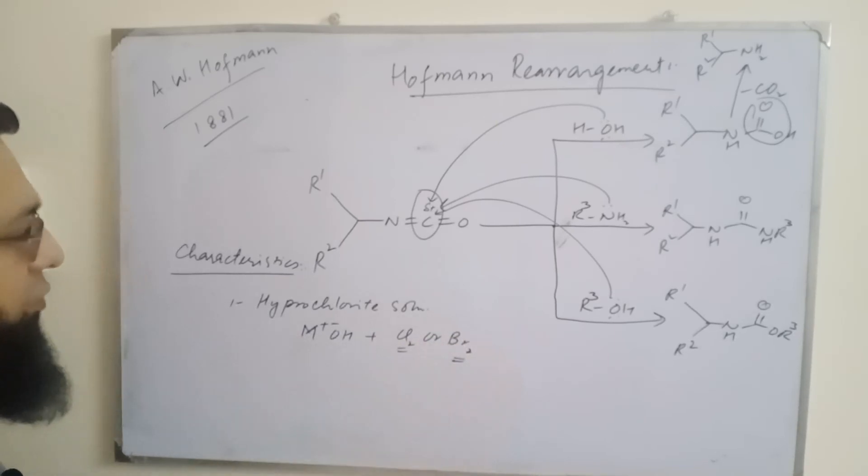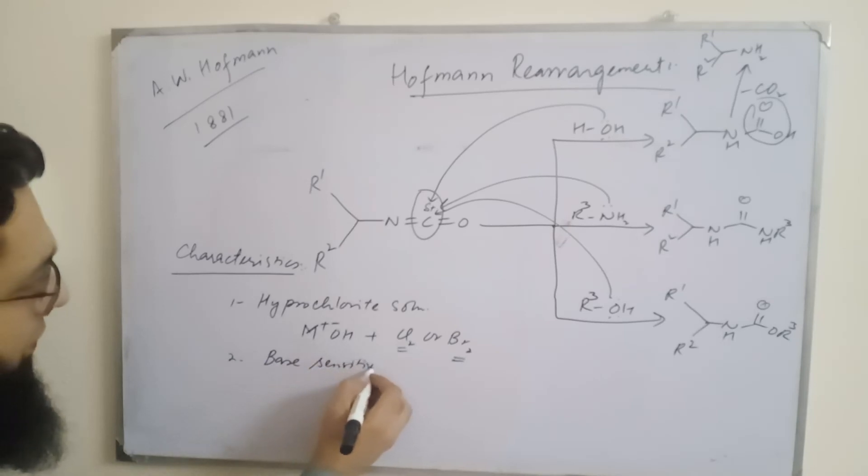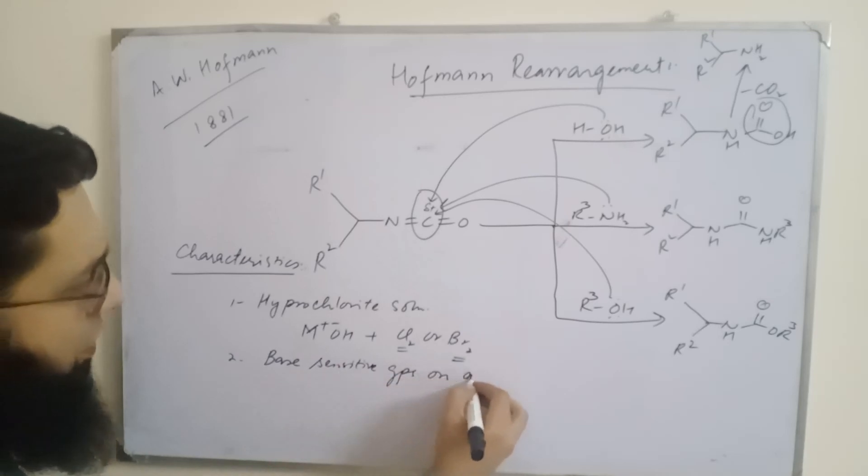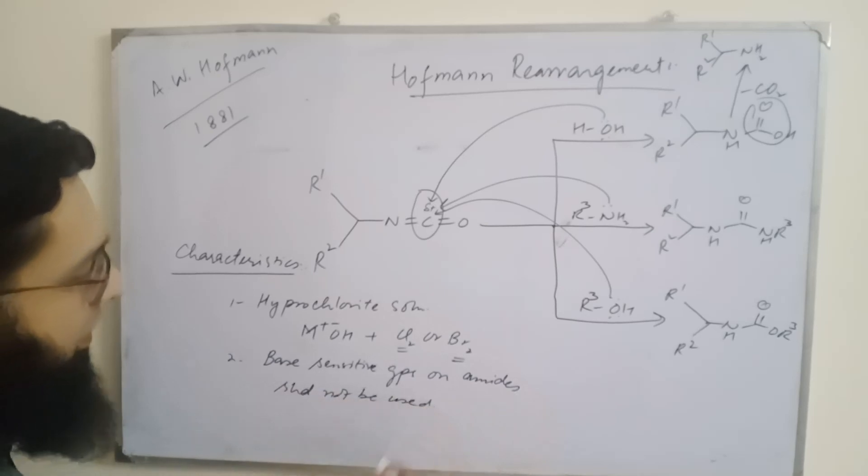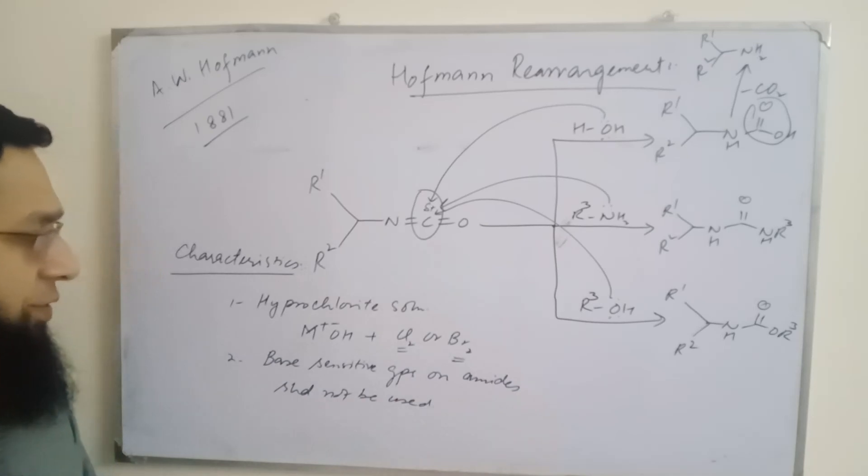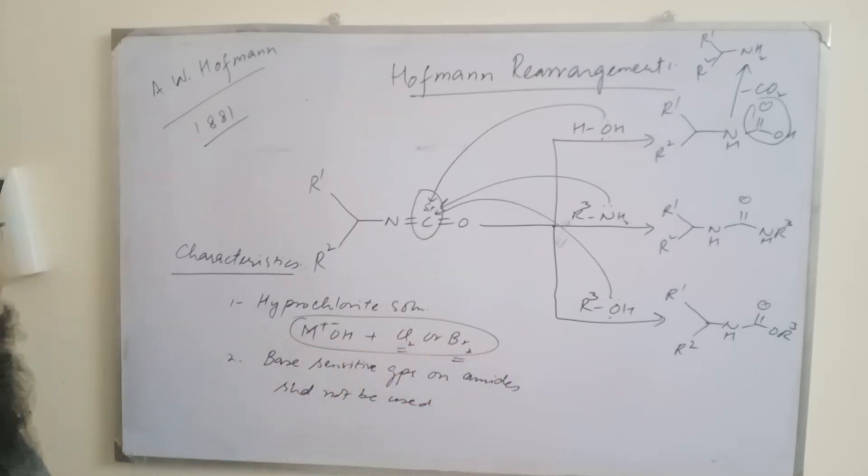Secondly, there should not be any base-sensitive groups on the amide. However, recent investigations show that if we use oxidative Hoffmann rearrangement using hypervalent iodine reagents, base-sensitive groups can also be used. In general conditions, base-sensitive groups on amide should be avoided because base can react with them. However, acid-sensitive groups can be used.